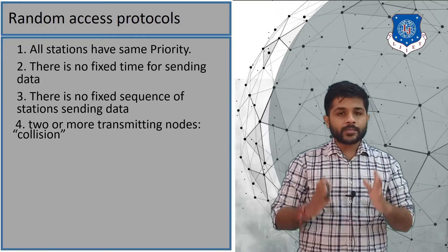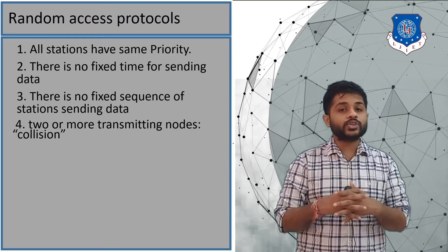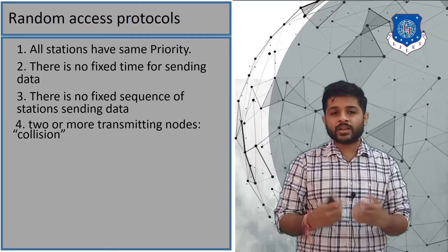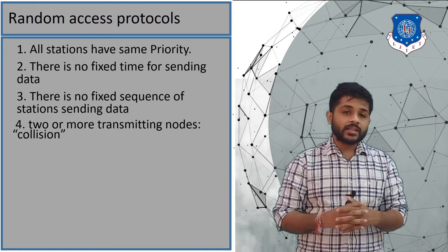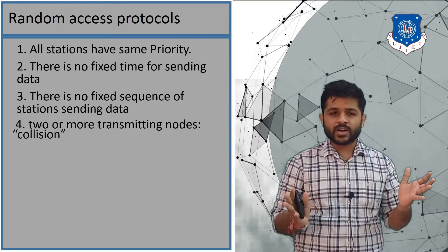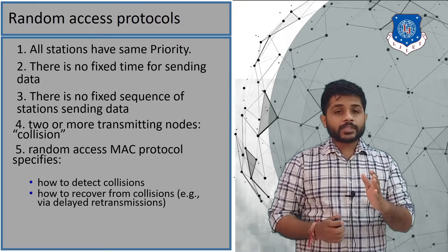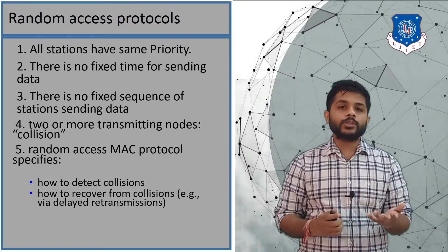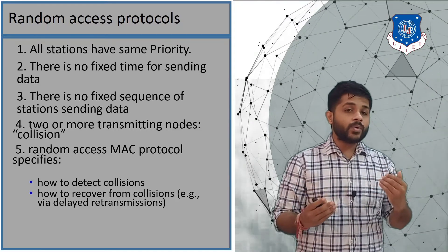When two or more devices send data at the same time, all that data will collide and create noise — junk in the channel. If this noise is received by the receiver, it will not be able to understand what the data is, because all the signals are changed drastically. In the random access protocol we will see how to detect the collision and how to recover from it.